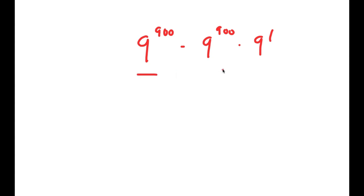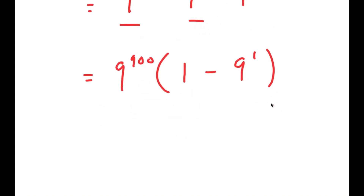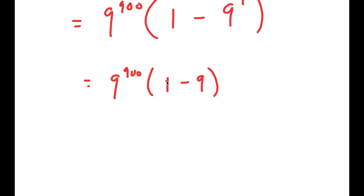So now from here, these two terms both have the factor 9 to the power of 900. So I'm going to factor out 9 to the power of 900. So now I get 9 to the power of 900 times 1 minus 9 to the power of 1. And this is equal to 9 to the power of 900 times 1 minus 9, because 9 to the power of 1 is the same thing as 9. Now, 1 minus 9 is equal to negative 8. So I get 9 to the power of 900 times negative 8.